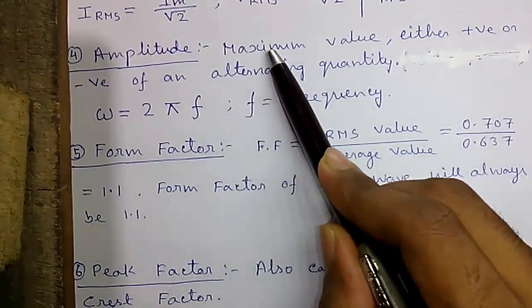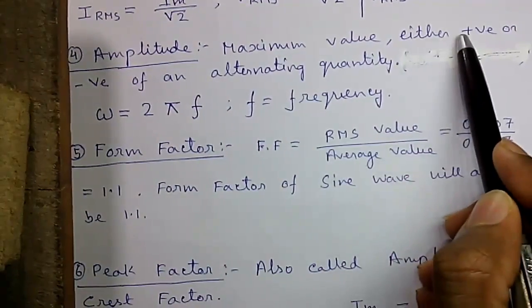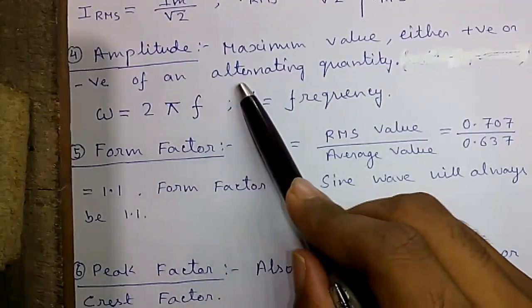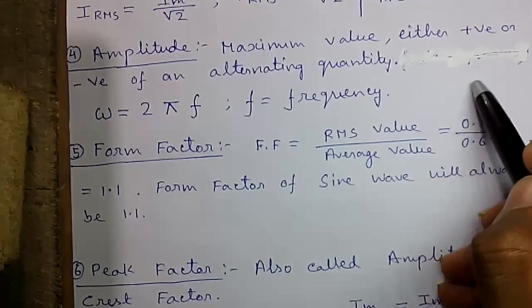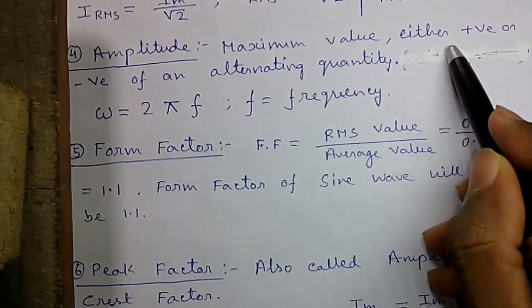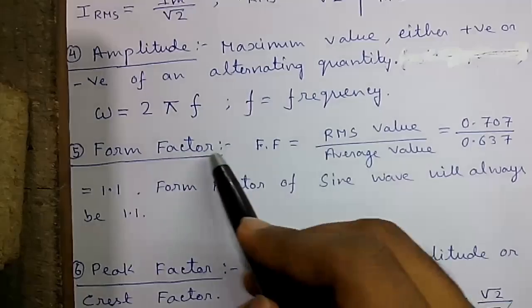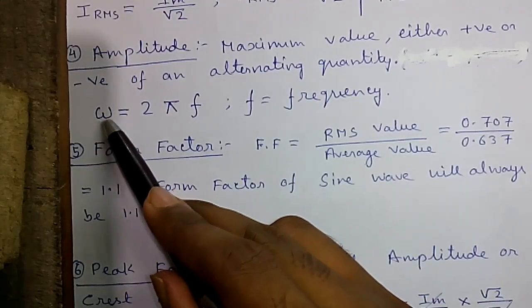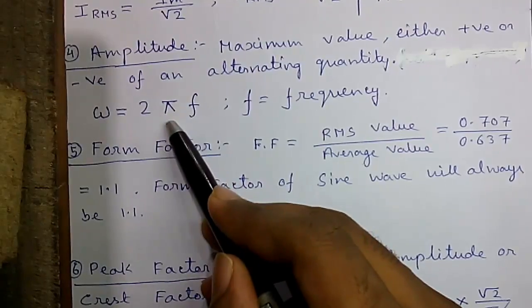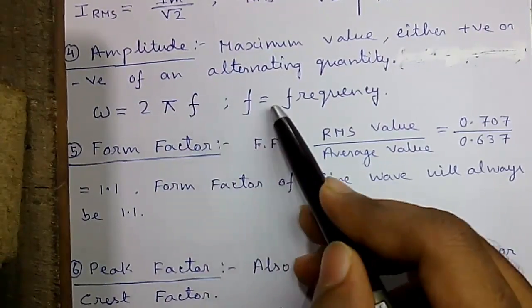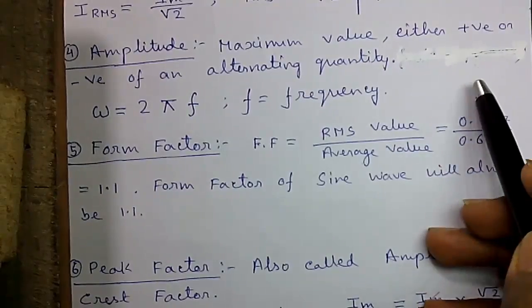Fourth formula, the amplitude. The maximum value either positive or negative of an alternating quantity is called the amplitude. Generally in sine wave the upper and lower values are called the positive and negative amplitude. Amplitude is represented by omega. Omega equals 2 pi F where F is the given frequency of the sinusoidal wave.